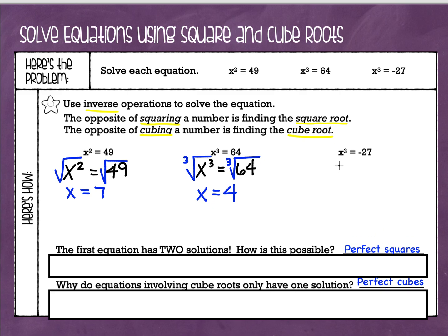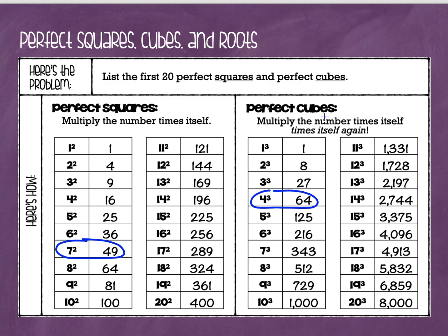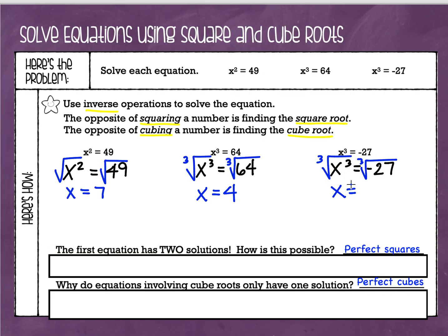Our last example is x to the third power equals negative 27. That's unusual — to have a negative. The opposite of going to the third power is finding the cube root. Whatever I do on one side of the equal sign, I do on the other side. The cube root of x cubed is just x — that cancels out. Now I need the cube root of negative 27: what number times itself times itself again gives negative 27? Looking at the table, the cube root of 27 is 3, meaning 3 × 3 × 3 = 27. But I need negative 27, so x equals negative 3.